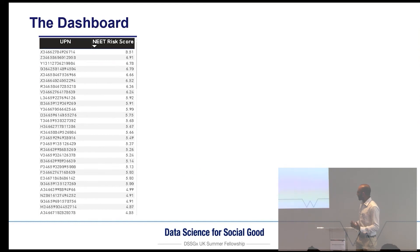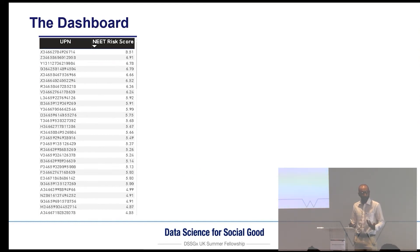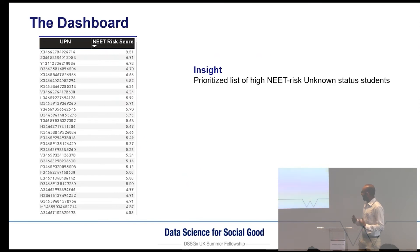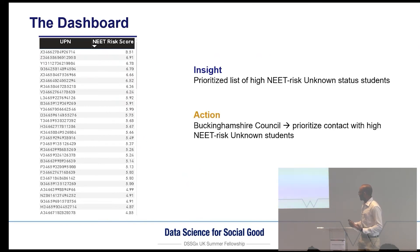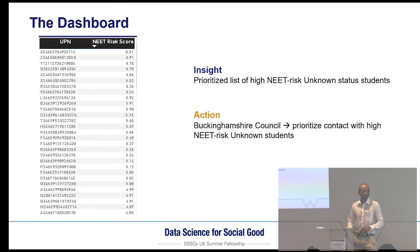Finally, we created a prioritized list of students with an unknown status that the council cannot currently contact. Using this information, the council can prioritize contact with those particular students who are most likely to be NEET.